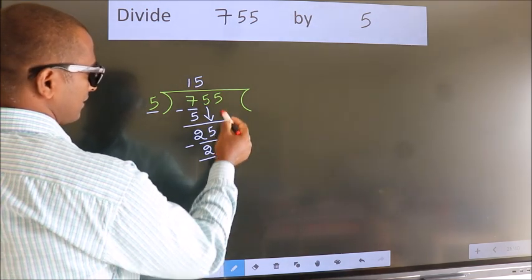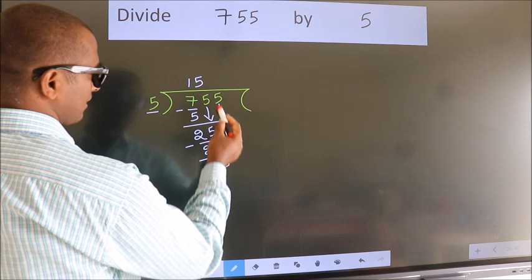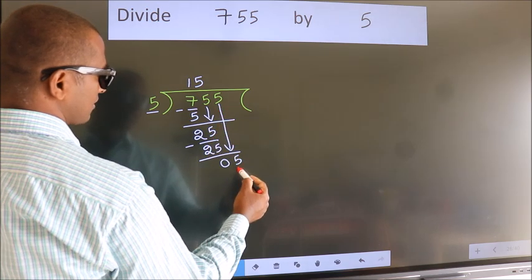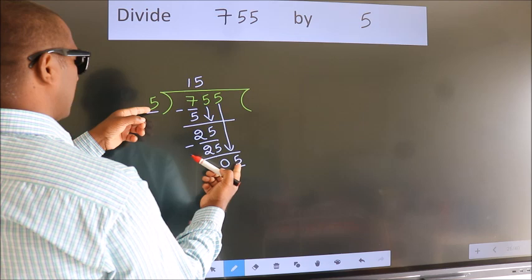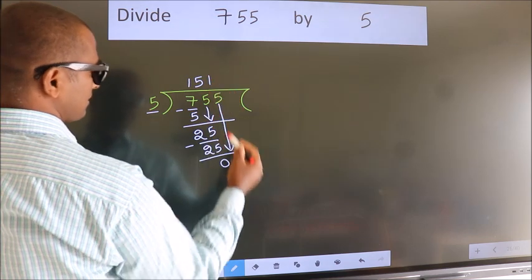After this, bring down the beside number. So 5 down, so 5. When do we get 5? In 5 table, 5 once 5.